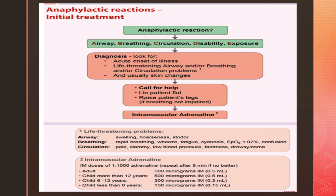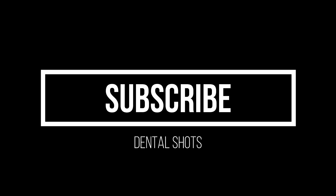To summarize: confirm the anaphylactic reaction using the ABCDE criteria, call for help, lay the patient flat and raise the legs, and administer intramuscular adrenaline promptly. The dosage is: adults and children over 12 years — 500 micrograms; 6–12 years — 300 micrograms; under 6 years — 150 micrograms (0.15 ml). Act vigilantly when a patient collapses in your chair and give adrenaline — the life-saving drug. Share this video with your dental colleagues and friends.